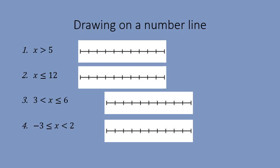For this first type of question, we're given the inequality in written form and asked to draw it on a number line. First we create the number line with the relevant numbers on it — I need 5 on this one, so I put 5 somewhere in the middle and complete the rest. The inequality says x is greater than 5 — it can't be equal to 5. So I put a non-filled-in dot at 5 and draw an arrow going in the direction of increasing values. You can have the arrow the full length of the number line.